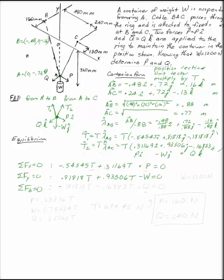And for the k's, I've got 0.181818T, minus 0.16883T, plus Q equals 0. So W is known. W was given in the problem as 1200 newtons.